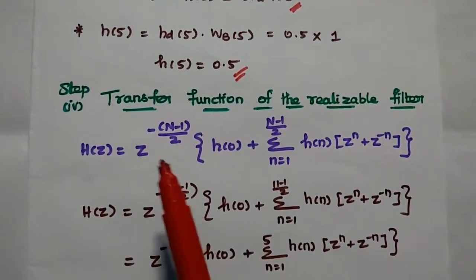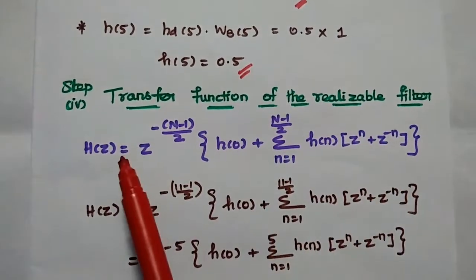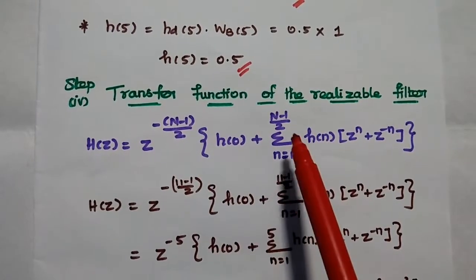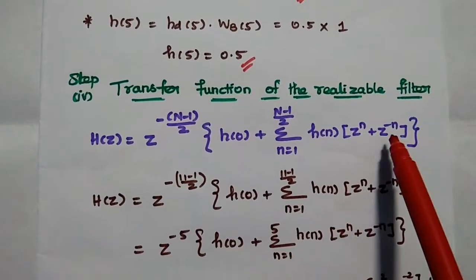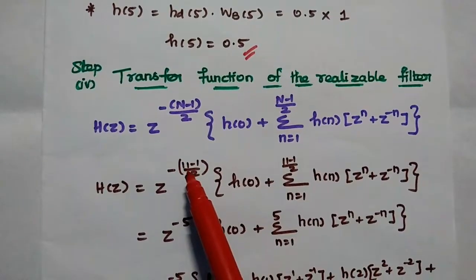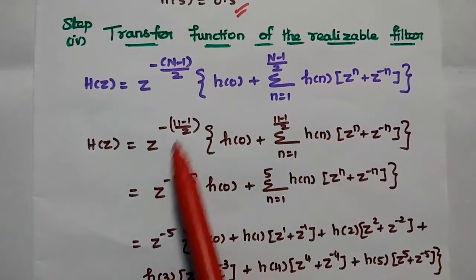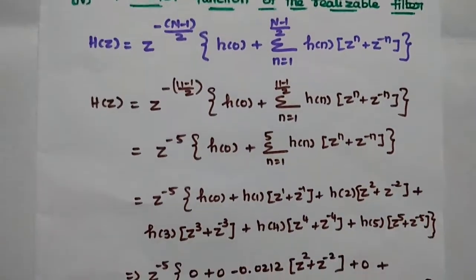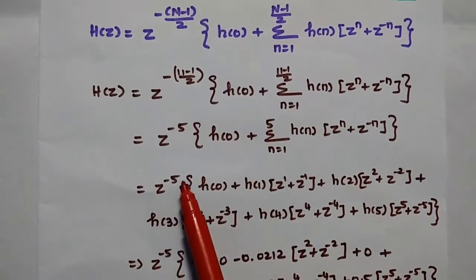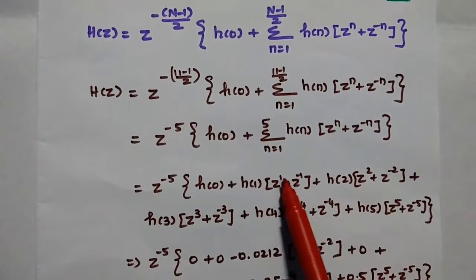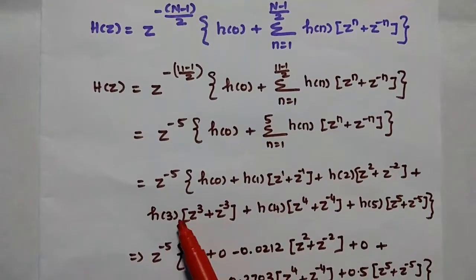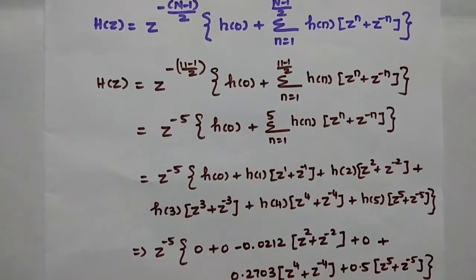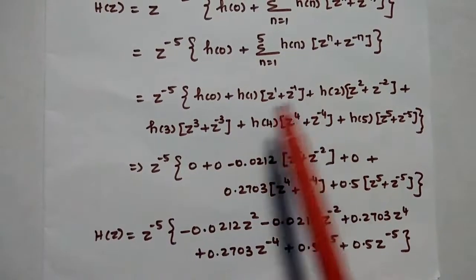The last step is to obtain the transfer function of the realizable filter. H(Z) = Z^(−(N−1)/2) × [H(0) + summation N=1 to (N−1)/2 of H(n)(Z^n + Z^(−n))]. Substituting N = 11 gives Z^(−5) × [H(0) + sum n=1 to 5 of H(n)(Z^n + Z^(−n))]. Expanding: Z^(−5) × [H(0) + H(1)(Z + Z^(−1)) + H(2)(Z^2 + Z^(−2)) + H(3)(Z^3 + Z^(−3)) + H(4)(Z^4 + Z^(−4)) + H(5)(Z^5 + Z^(−5))].